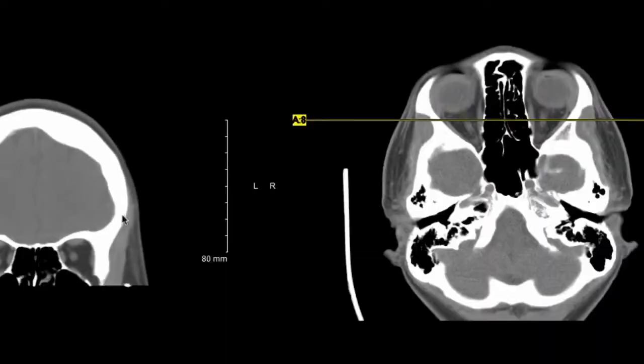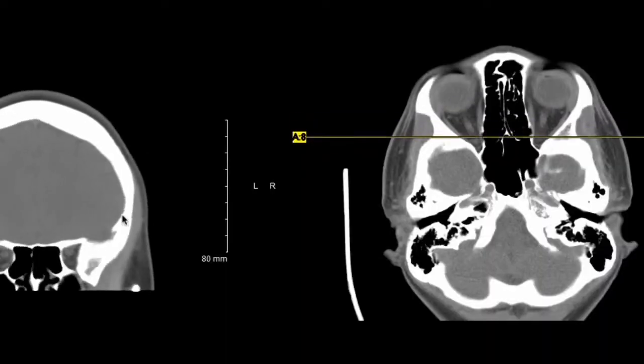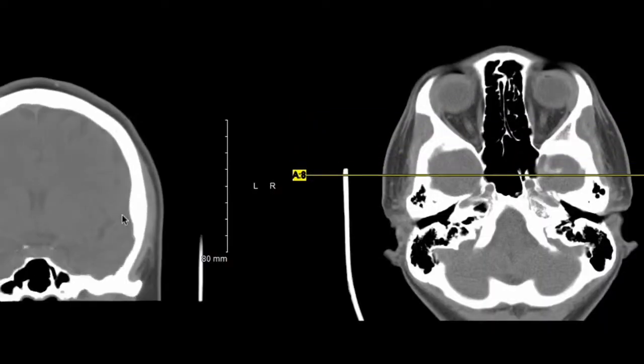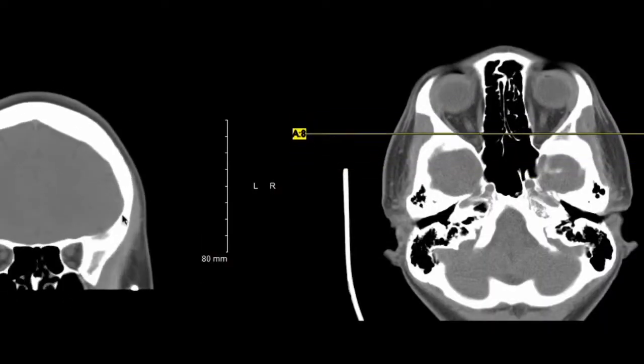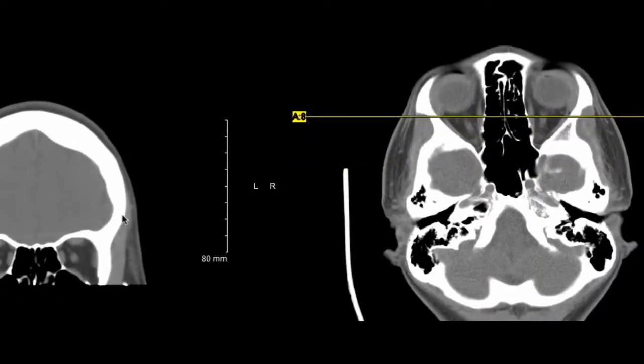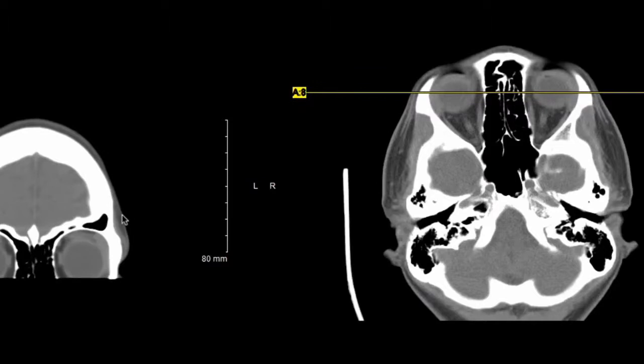You go see the patient and everything's normal — you can ask me anything about the patient, the answer is normal. So then you go back to the CT. How do you explain this? First of all, where is it? If you know where it is, then you're golden.